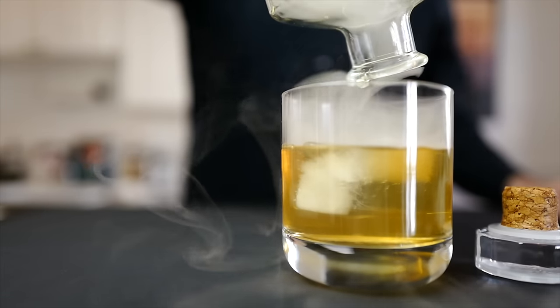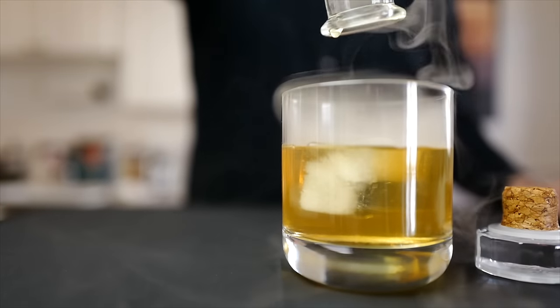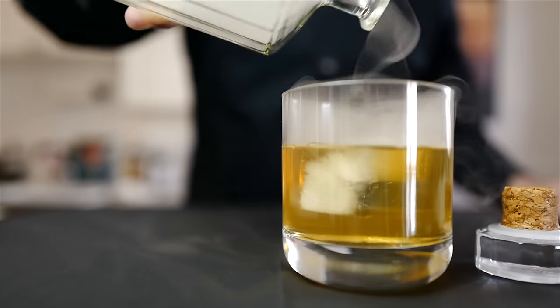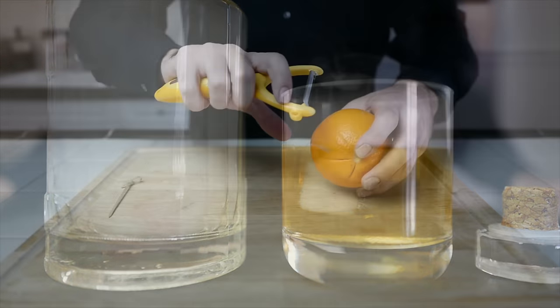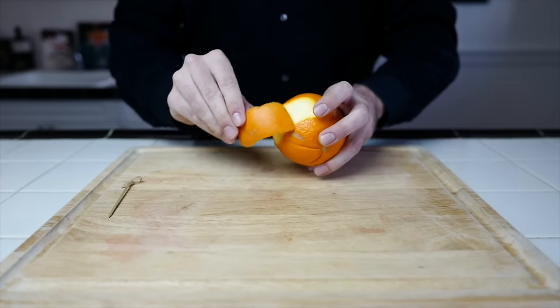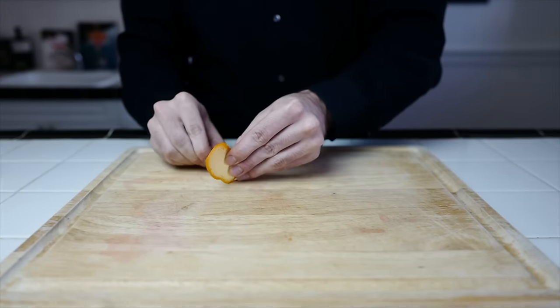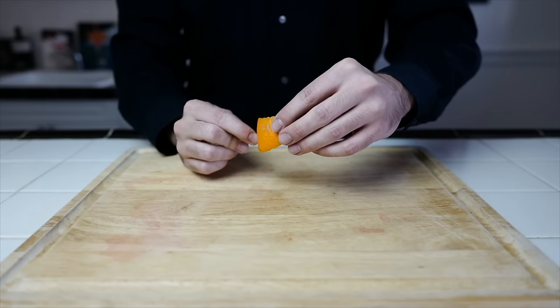A well-crafted cocktail has a great aroma, taste, and presentation. This smoked old fashioned hits all three. I always like to add a nice garnish to a cocktail. So here for this old fashioned, we're going to take a slice of orange peel and fold it around a Luxardo Maraschino cherry.